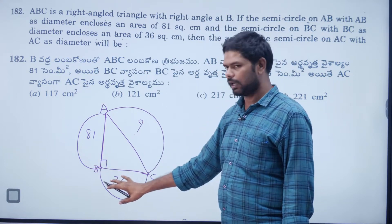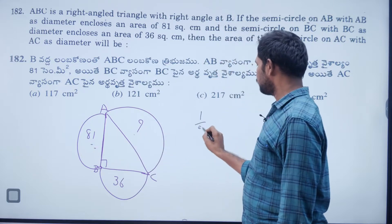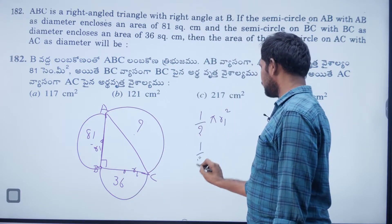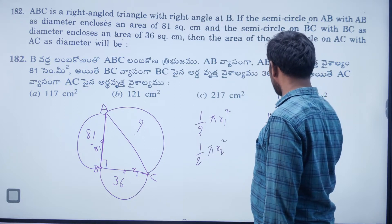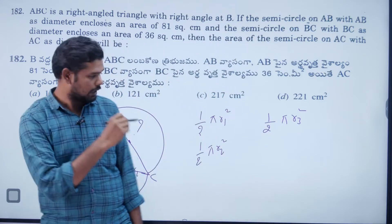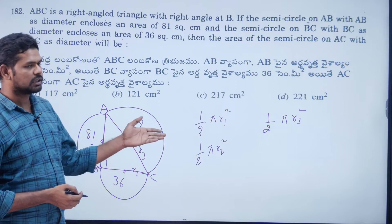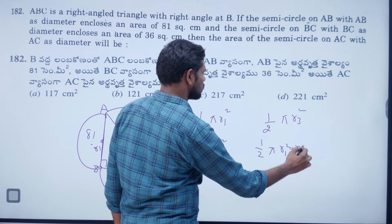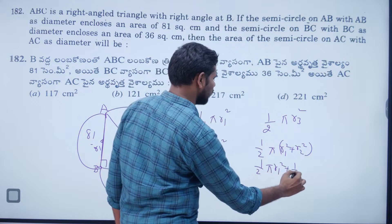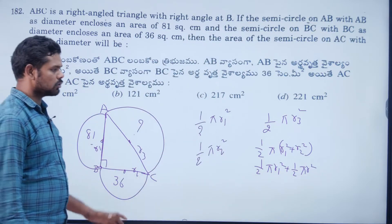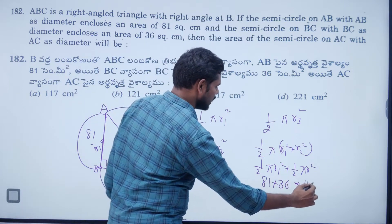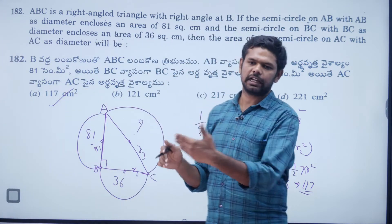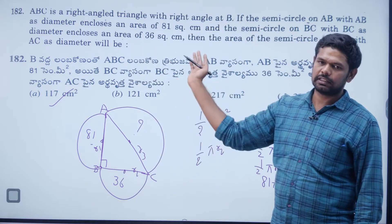The formula for a semicircle is half π r². Let the radii be r1, r2, r3. So: half π r1² = 81, half π r2² = 36. Therefore 81 + 36 = 117 is the required answer. In a right-angle triangle, side² + side² equals hypotenuse², so 81 + 36 = 117.